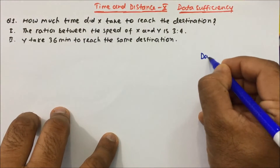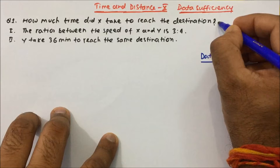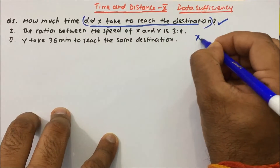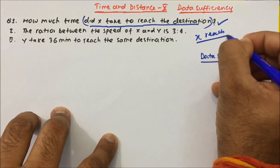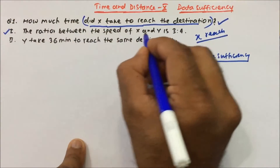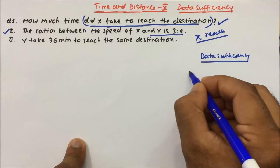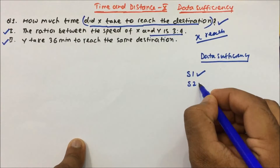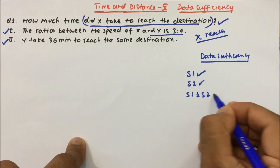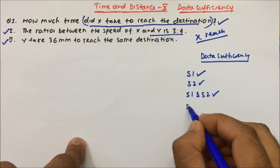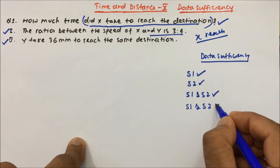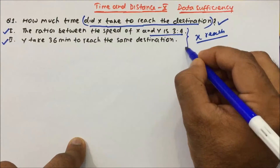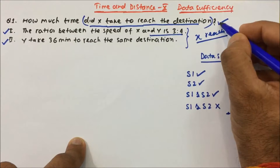So how do we deal with a data sufficiency question? The question asks: how much time did x take to reach the destination? You have to tell whether you can get the answer from Statement 1 alone, Statement 2 alone, both statements together, or if neither statement is sufficient. You have to tell if the data given is sufficient to answer the question.